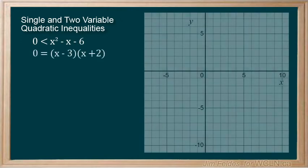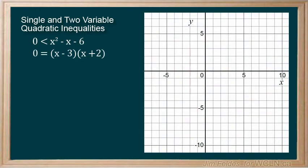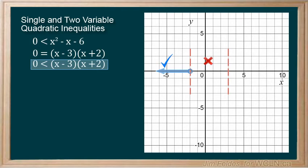By making an equation, we used the factors to establish roots, or zero points. The points on the line that make the equation true. Then we tested intervals to solve our inequality statement, as shown here.